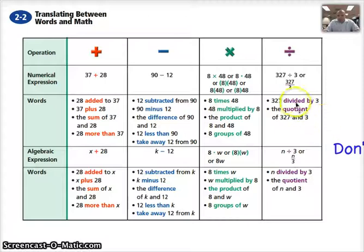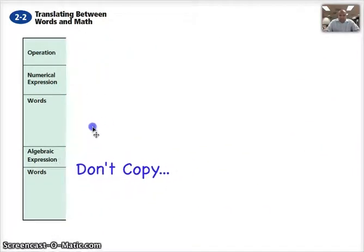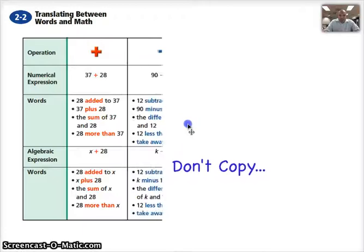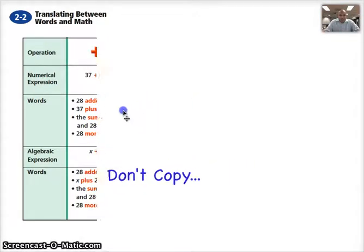Division. There's actually only two ways we can interpret a division sign. You'll either see it with a division symbol, or that fraction bar. Here we can say 327 divided by 3, or the quotient, which means the answer to a division problem of 327 and 3. Alright. You'll see that more tomorrow, but that helps you translate numbers into actual English phrases.